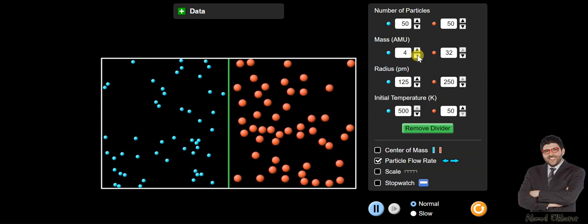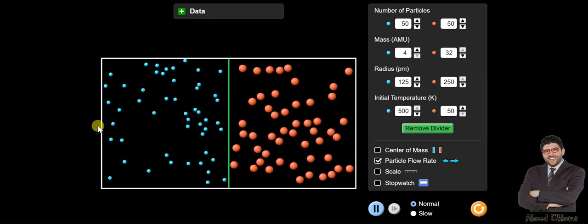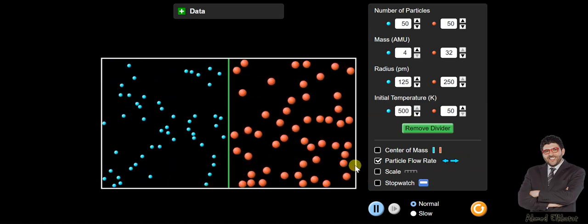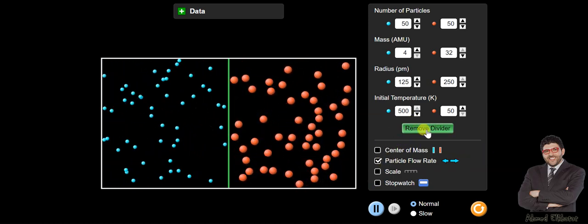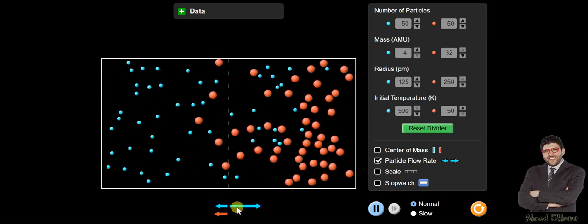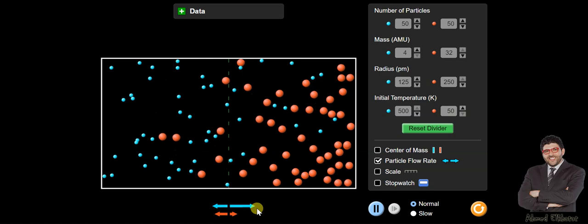Okay, now so this one is almost, it's not exactly but almost unimolar. So now let's remove the divider. Now as you can see, only, almost only blue diffuses through the red.